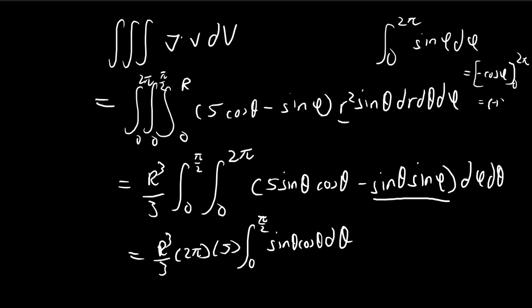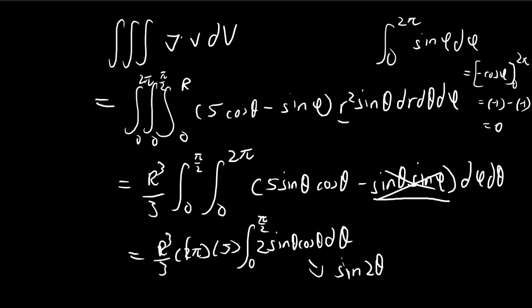So cosine 2 pi is equal to negative 1. Negative cosine 0, that's negative 1, so it's just 0. So this term goes away. So all we're left with is this over here. So moving on, I'm going to move this 2 over to the inside and then use a double angle formula. This gives us sine 2 theta. So this transformation here will be handy.